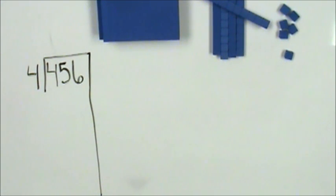Partial quotient is a great strategy for students to use for division, especially if they're having difficulty recalling their facts. Let's look at this first problem, 456 divided by 4.